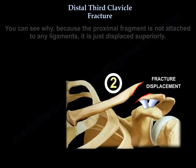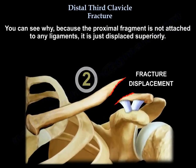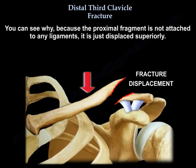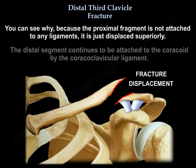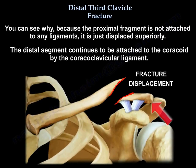You can see why, because that proximal fragment is not attached to any ligaments — it just displaces superiorly. The distal segment continues to be attached to the coracoid by the coracoclavicular ligament.